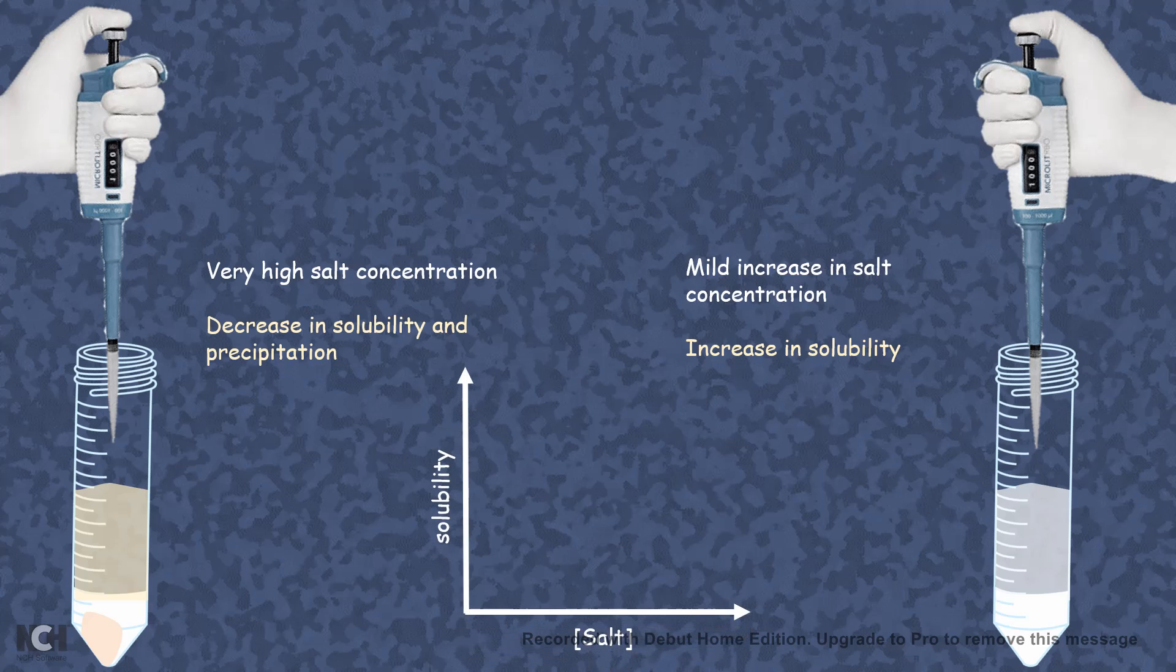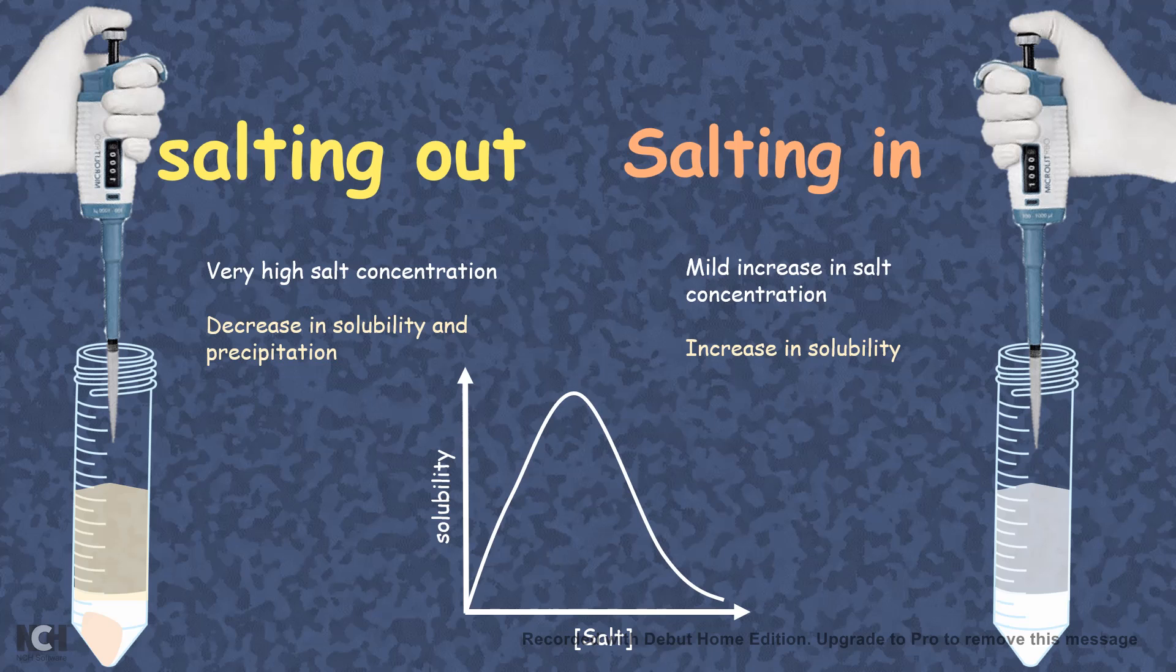So if you plot a graph with solubility versus the salt concentration, you initially see an increase in solubility with increase of salt concentration. But later, with the increase of salt concentration, there is a decrease in the solubility. The first phenomena is popularly known as salting in. With increase of salt concentration, there is an increase in solubility. And the second condition is known as salting out. With very high salt concentration, the proteins are precipitated out.